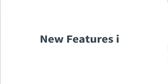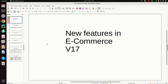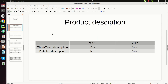We will look at two features in ecommerce version 17, one by one. The first one is product description. In version 16 we could only define a search description, but in version 17 we can define a detailed description on the product page.